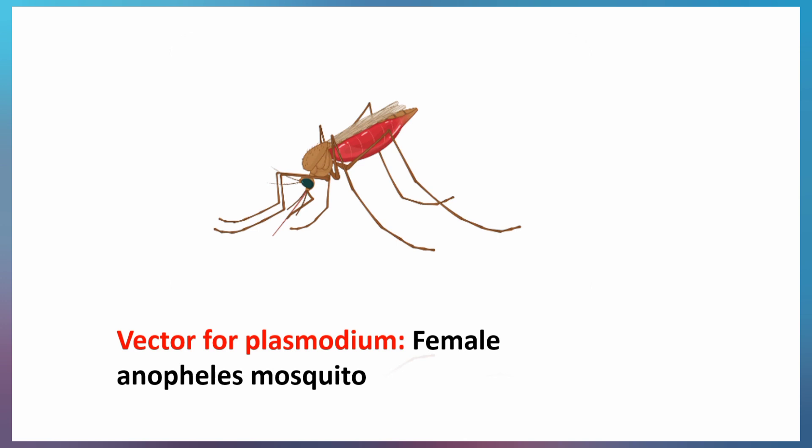The organism that serves as a vector for the Plasmodium parasite is the female Anopheles mosquito. A vector is an organism that serves as a delivery guide — in other words, an organism that harbors the actual parasite that causes the disease.